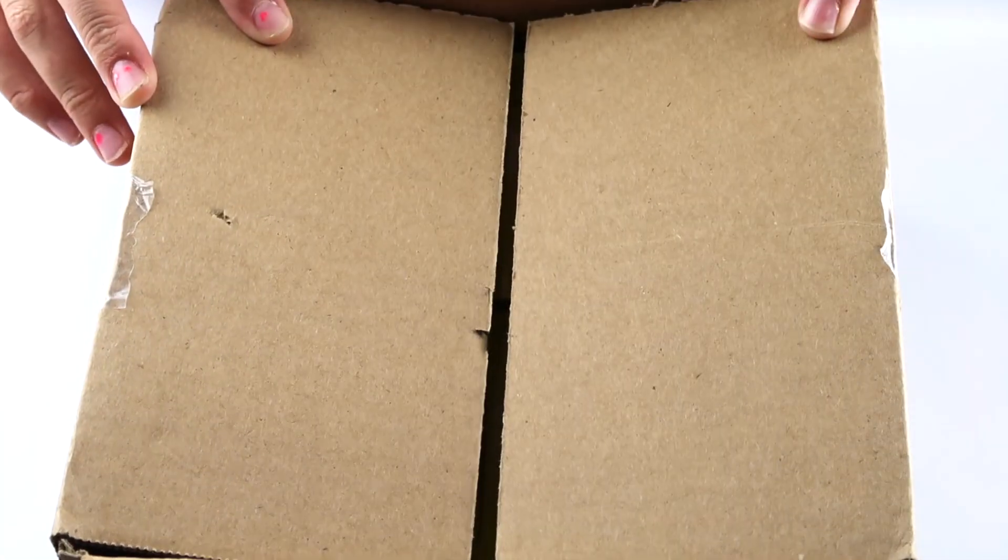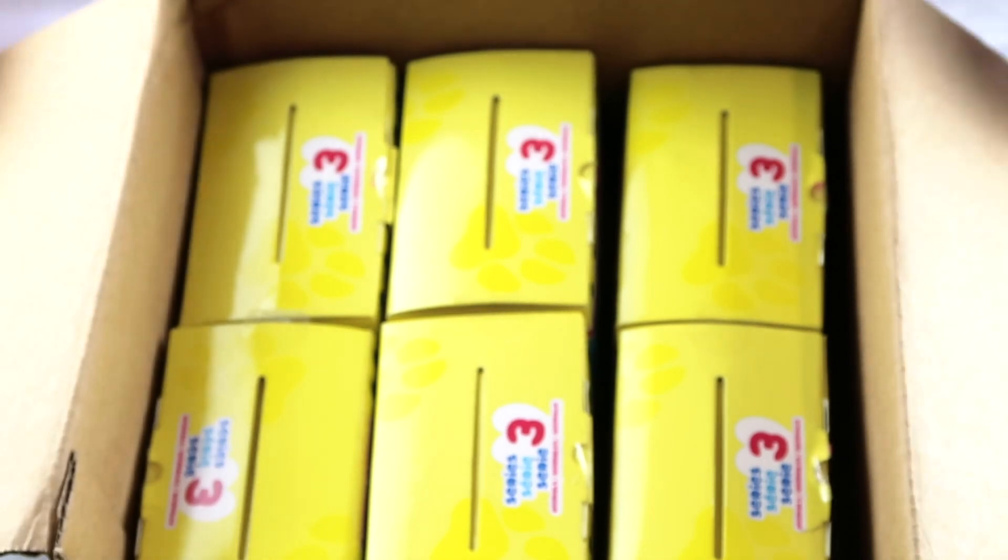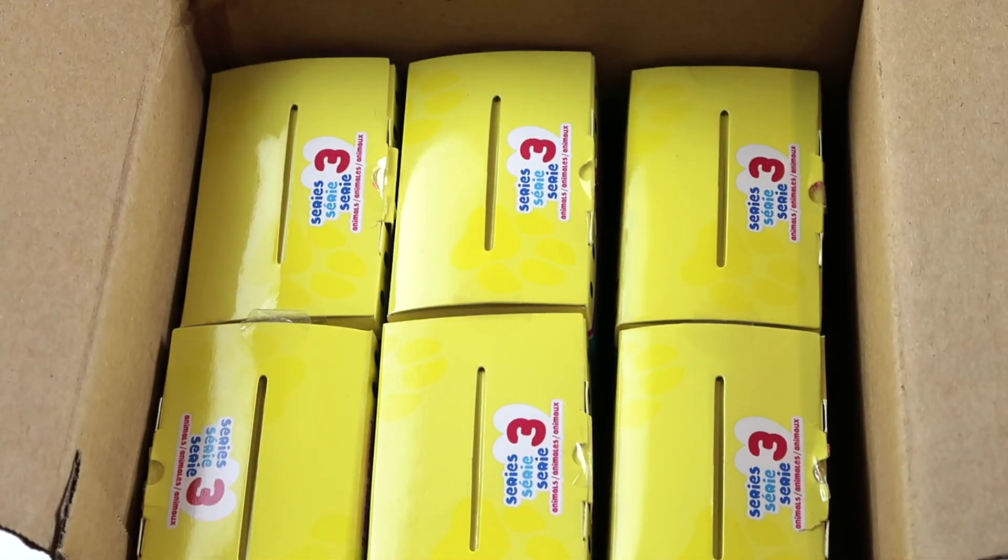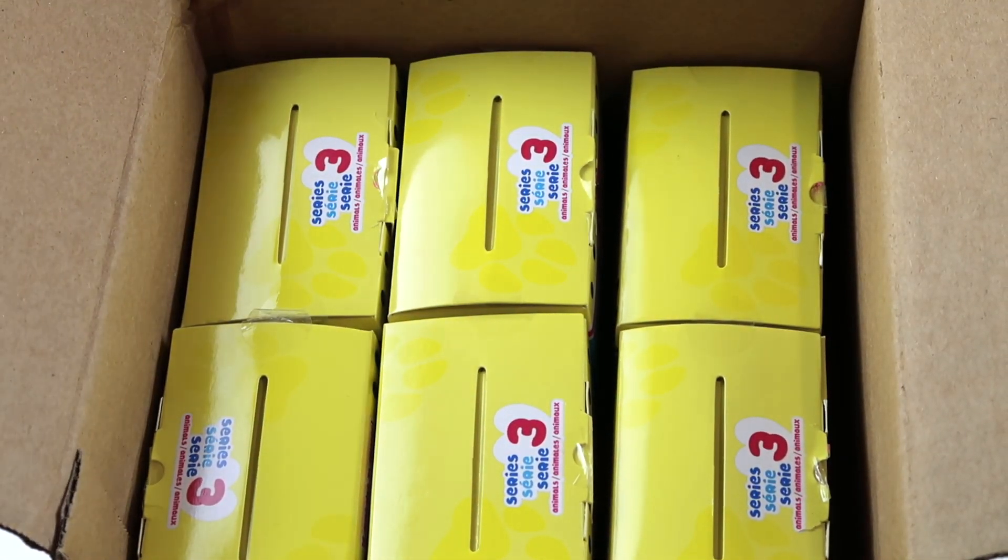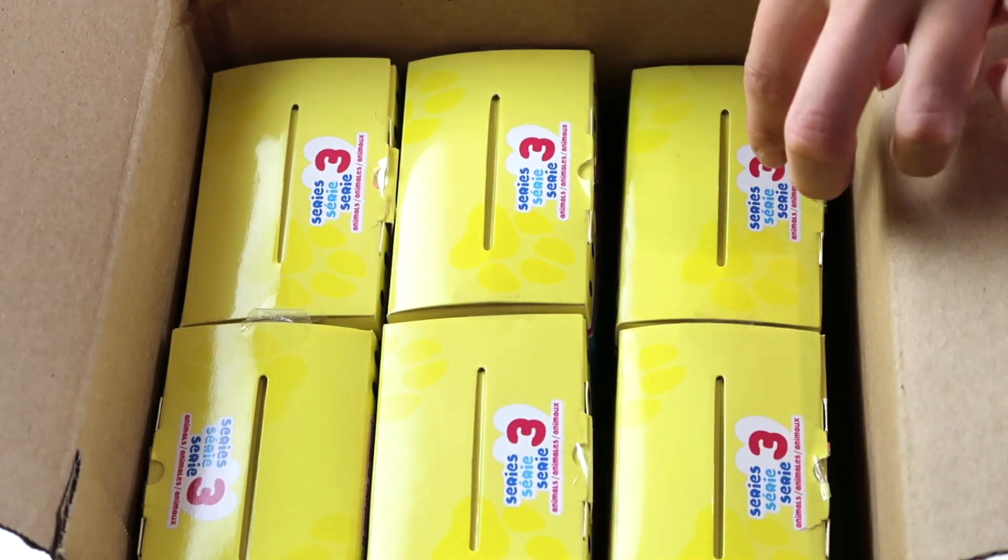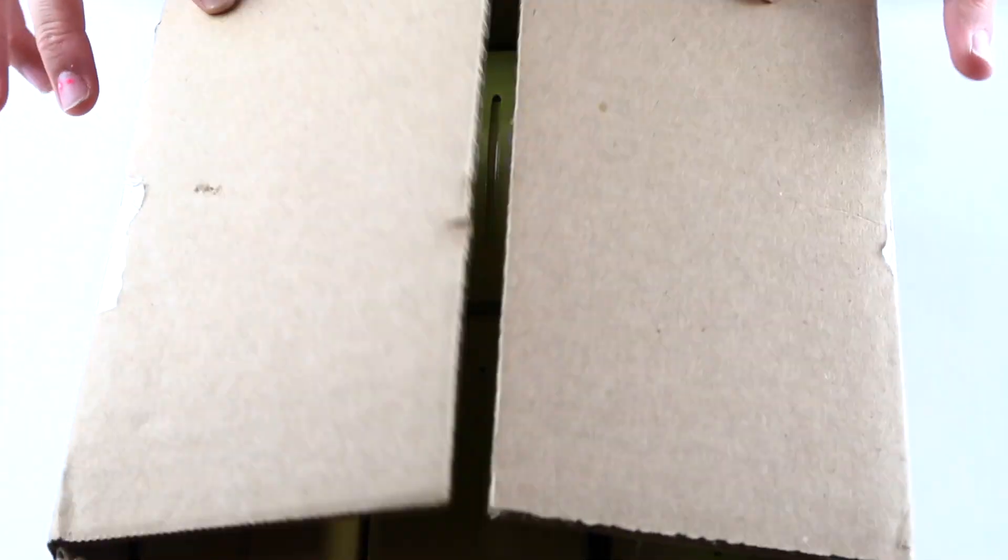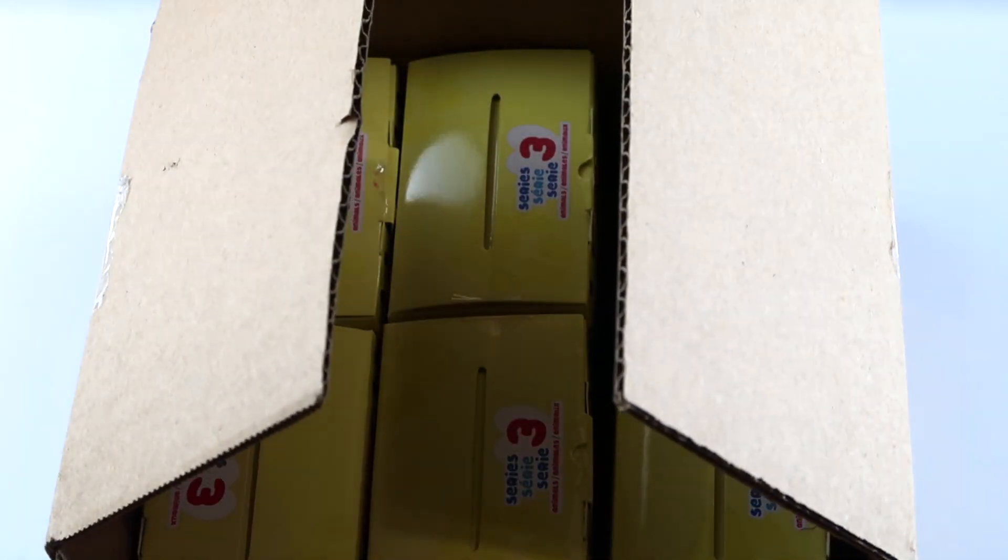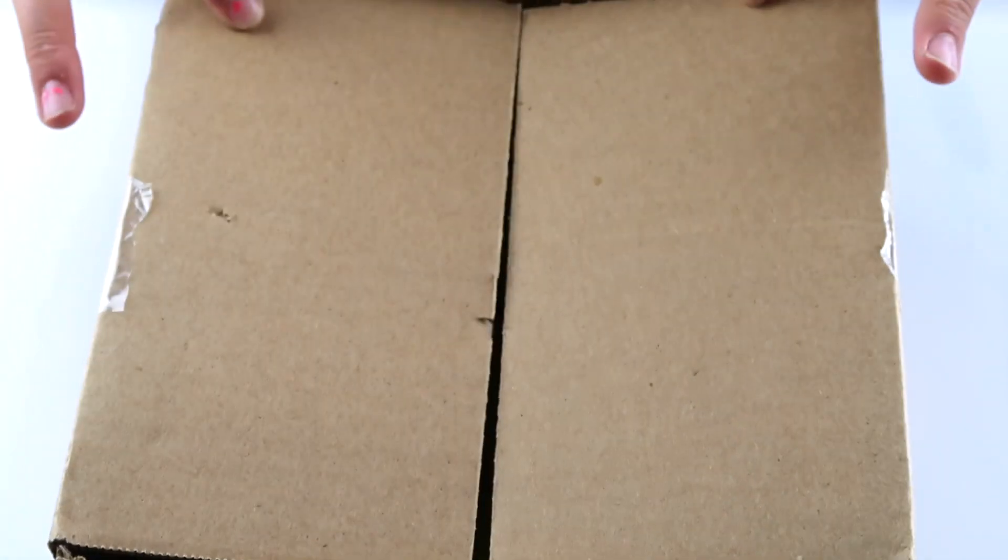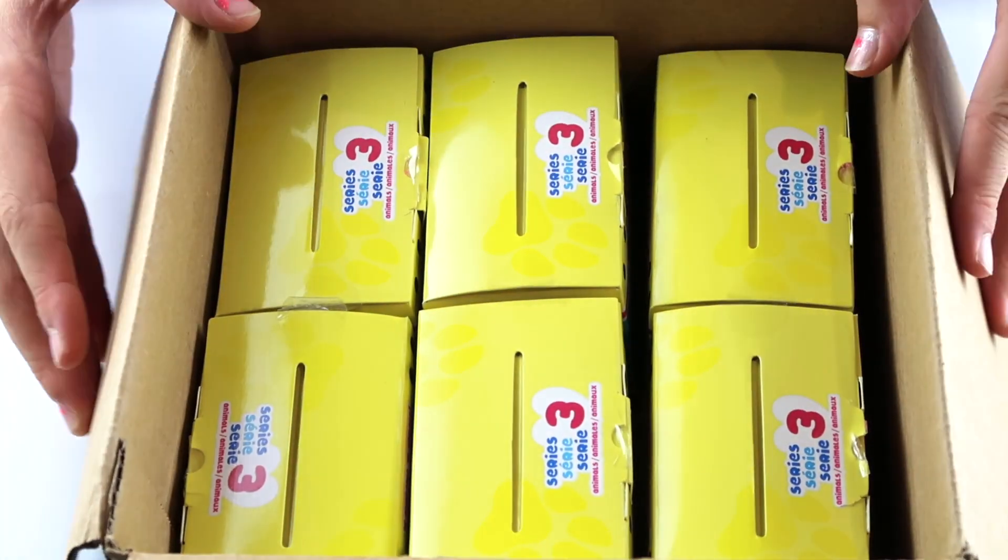So that was series one and two. So now we are going to be showing you series three. And they are brand spanking new. And as you can tell they have paw prints on them. I don't know if you can see it, but it's paw prints and they're animals. And they come out in early July. And we are not sure if they already came out or if they are, but we definitely know that they're coming out in early July. And if you do not see them anywhere, you saw them here first. So we also got six.